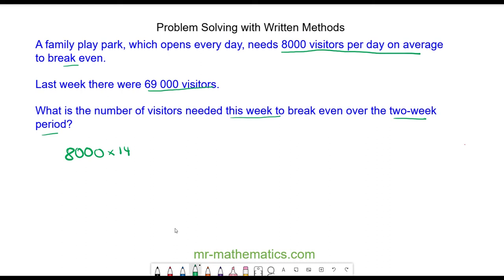I'm going to rewrite this calculation to make it simpler. We have 8 multiplied by 14 multiplied by 1000.